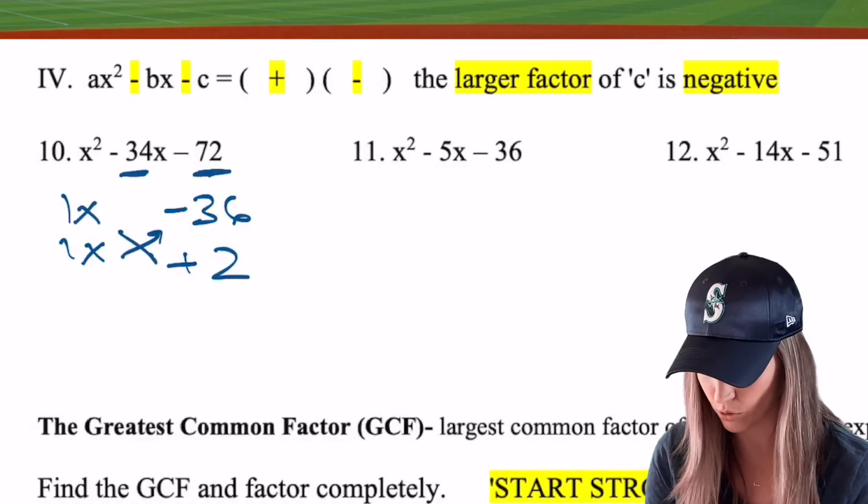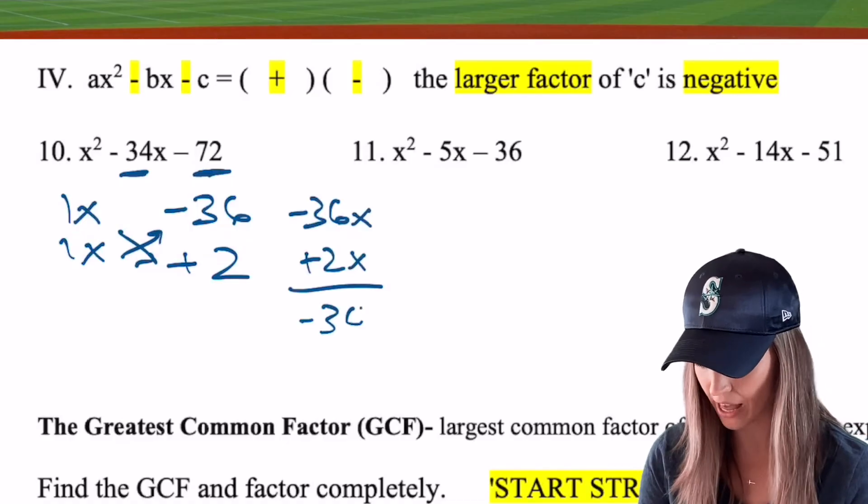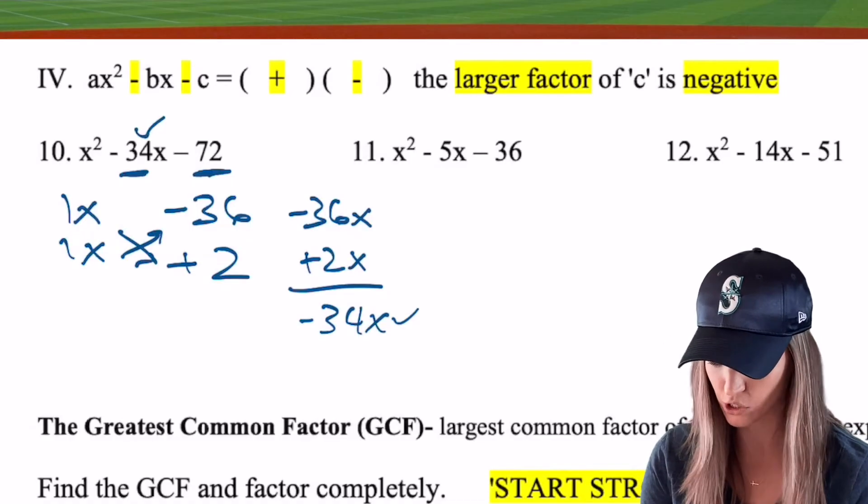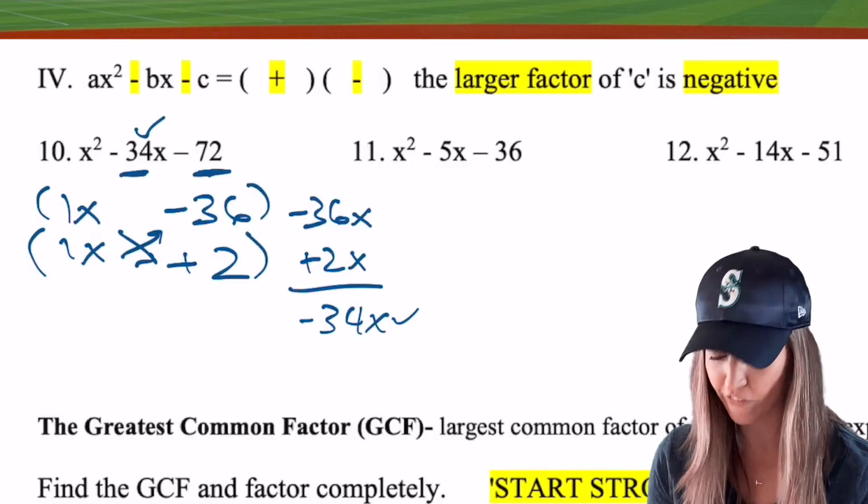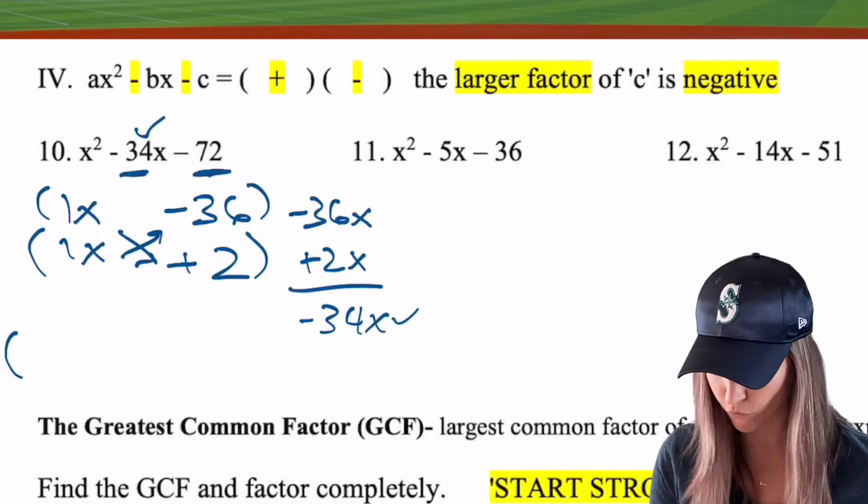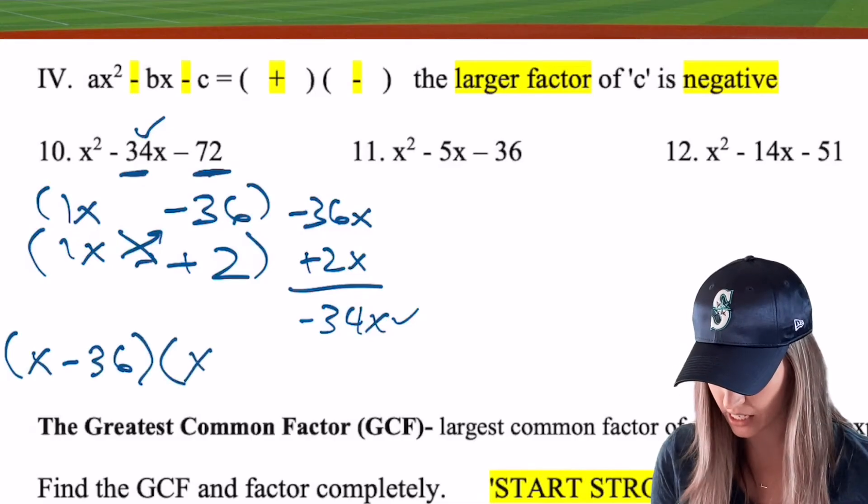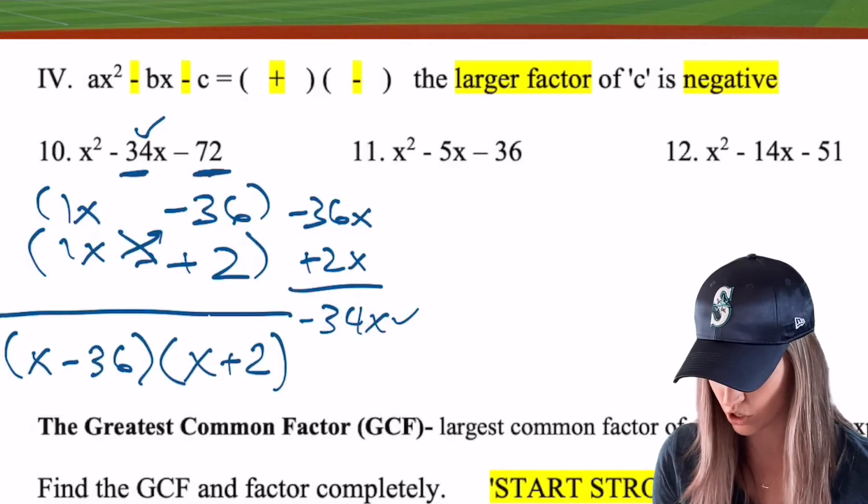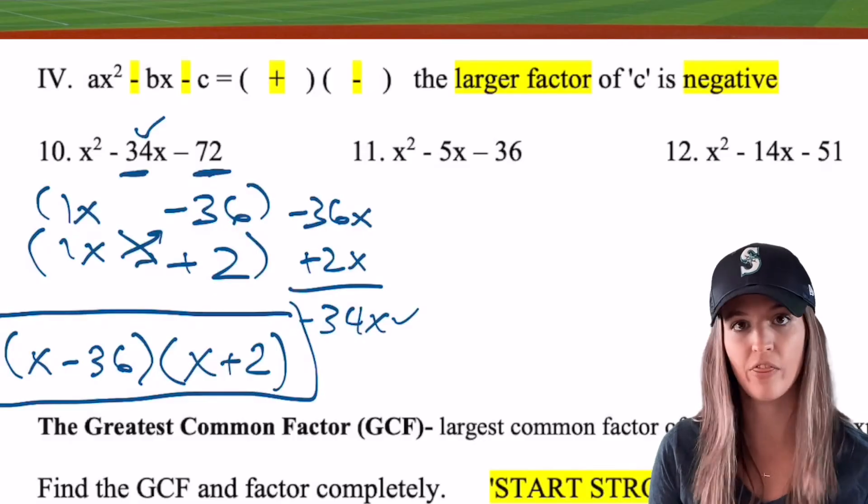36 times 2 is 72 and then those could add somehow to a 34. So I'm going to have my 36 and 2. I know one of them needs to be positive, one of them needs to be negative. And I want that middle term to be negative. So I need my largest product, so my 36 to be negative and my smaller one to be positive. That way they still multiply to a negative and add to a negative. Let's check to see if this actually works though. Criss cross. Add those together. I get negative 34 X. So it does work. So I've got one factor, the other factor, let's make sure we write it in the correct format. X minus 36 times X plus 2.